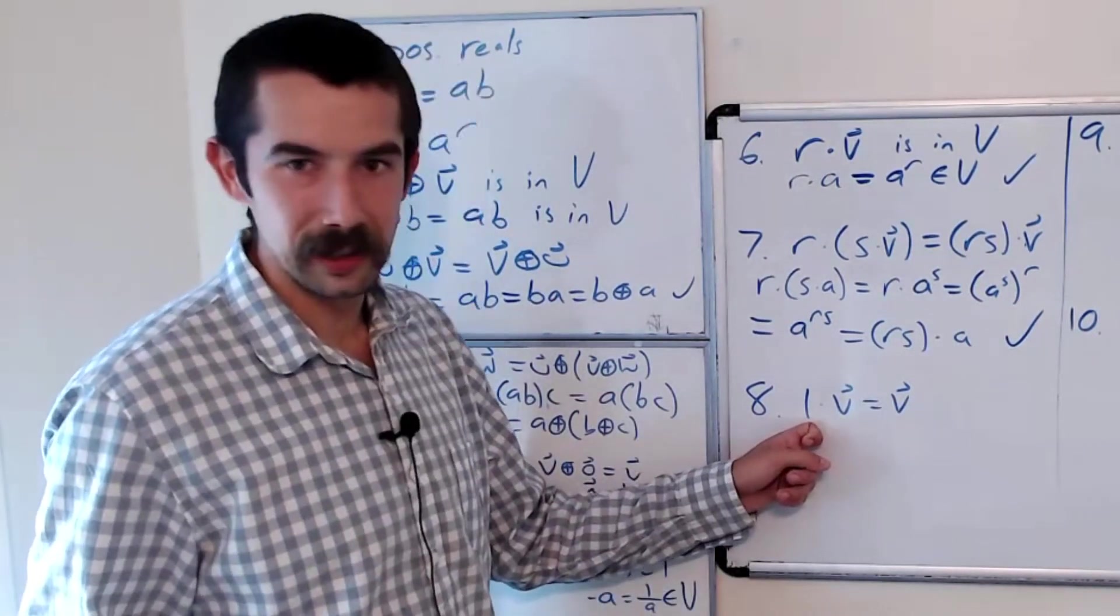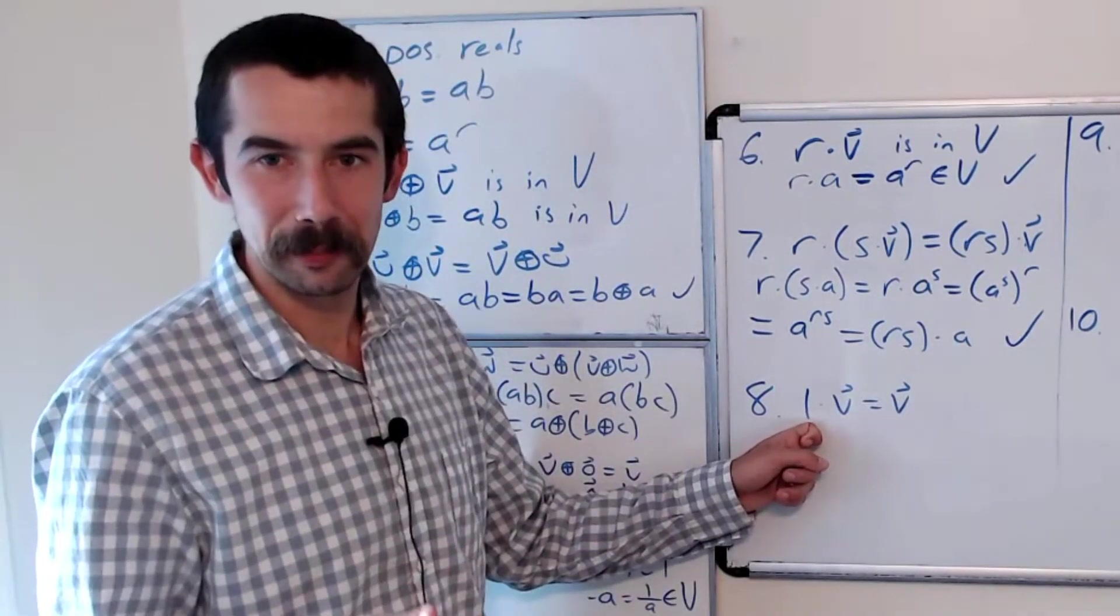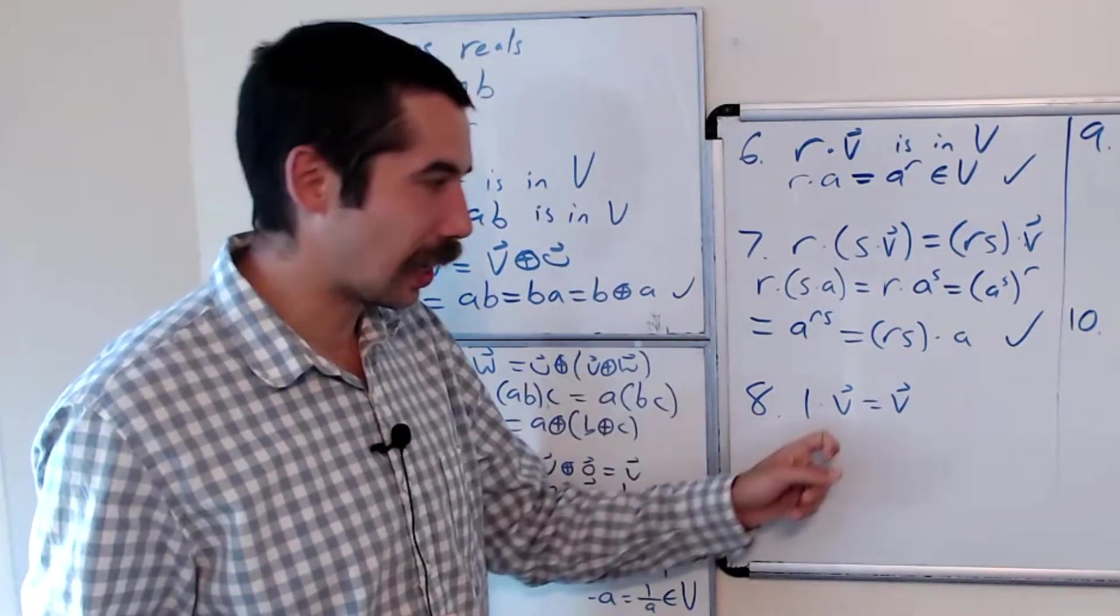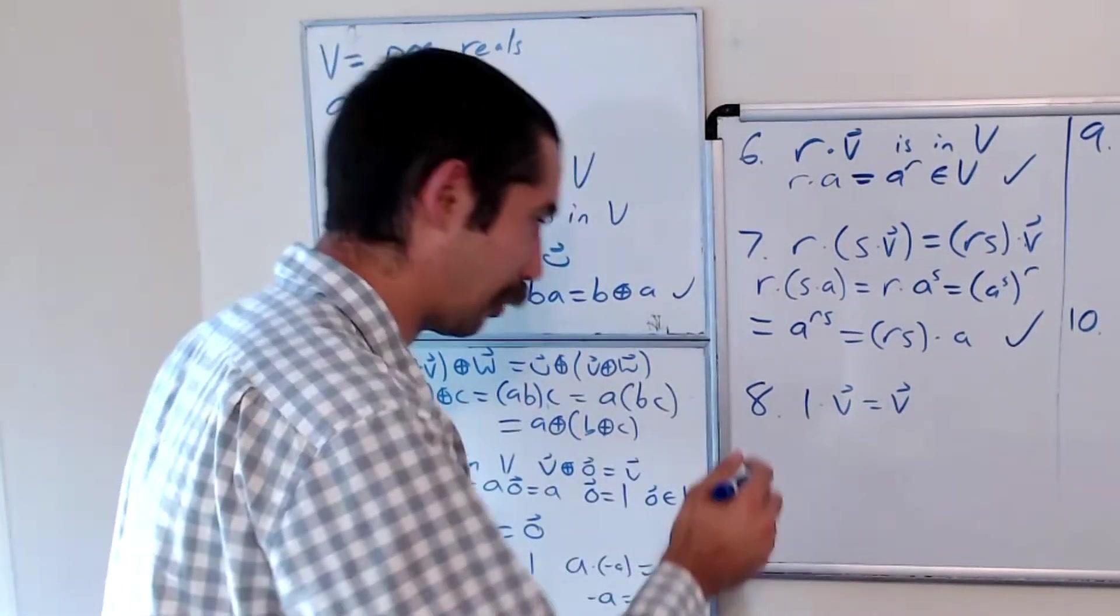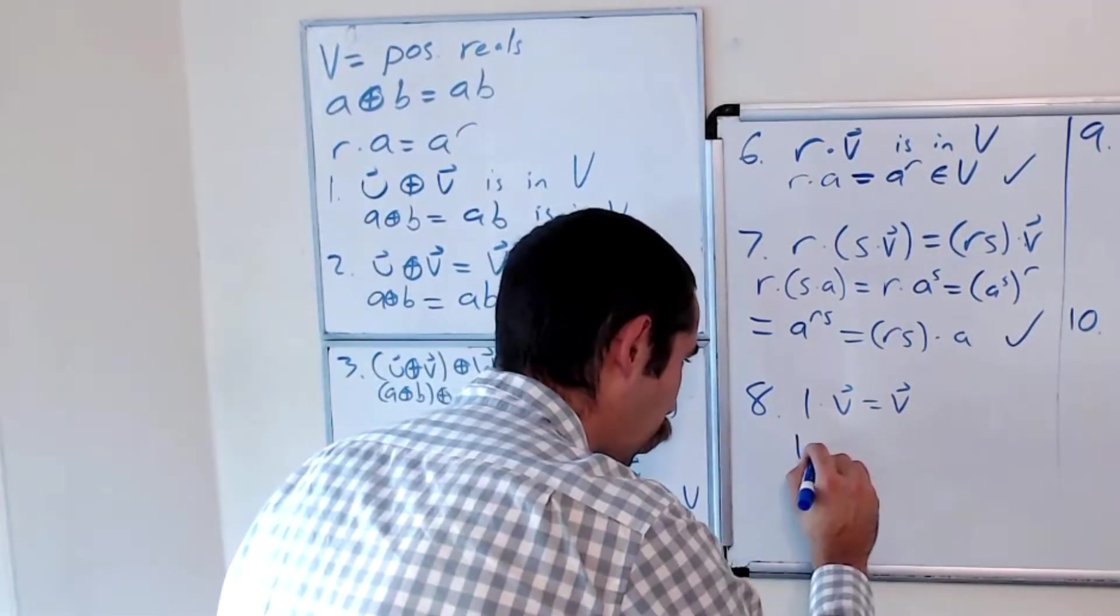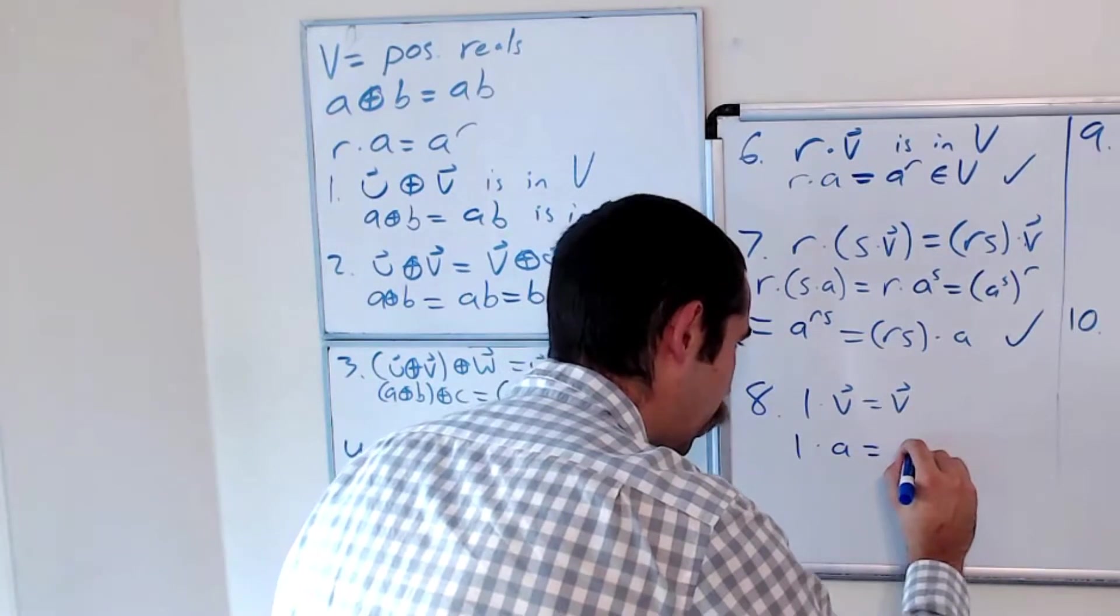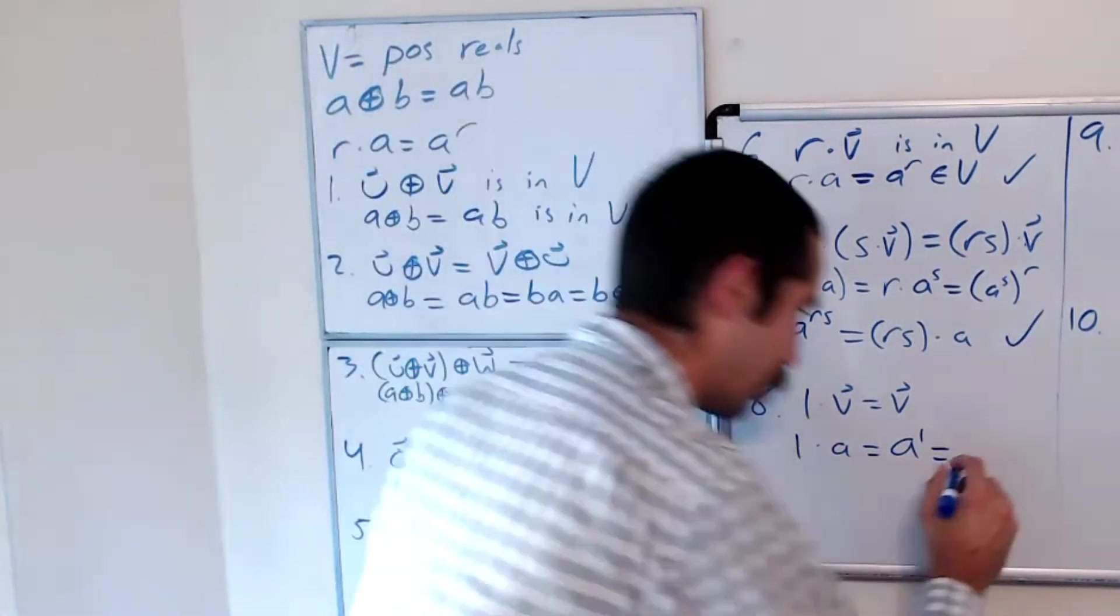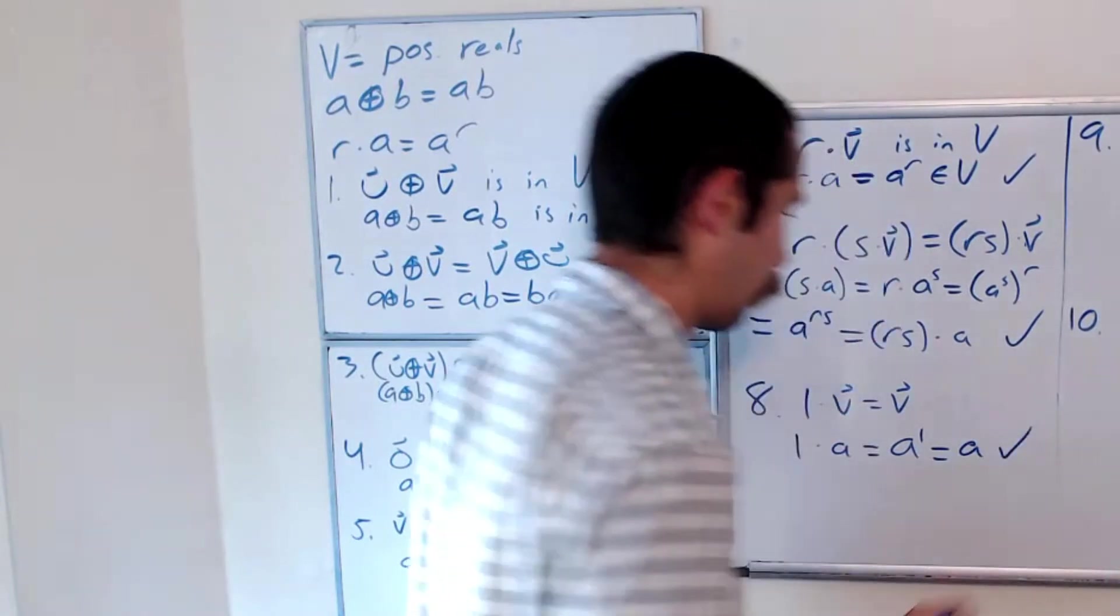Next, we want to show that one, the real number one times any positive real number using our definition of times gives us what we started with originally. So let's work that through. So 1·A, by definition, that's equal to A^1, and anything to the first power is itself.